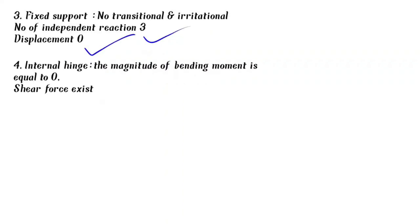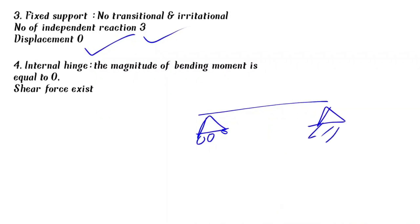Next, internal hinge. At an internal hinge, the magnitude of bending moment is equal to 0, but shear force exists at the internal hinge.